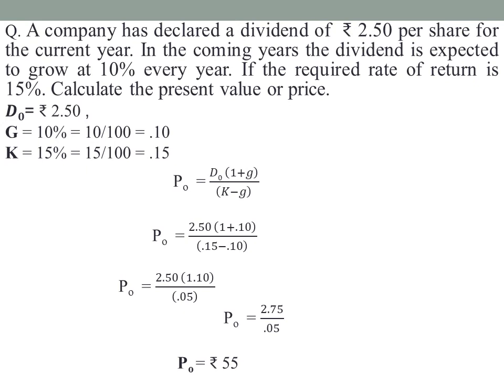If the question provides the current selling price or market price, we compare the intrinsic value to the current market price to give a buy or sell recommendation. When the current year's dividend is given, we use the second formula: D0 × (1 + G) / (K − G). When the dividend for the coming or future years is given, we use the first formula: D1 / (K − G). This is all about calculating the present value or intrinsic value of a share under the constant growth model.